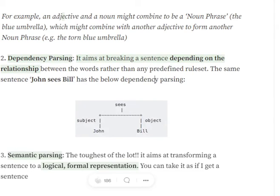The next one being dependency parsing. It aims to break the sentence by depending upon the relationship between the words. John sees Bill, as you can see in the example, gets divided as subject and object. John is the subject and object is Bill.